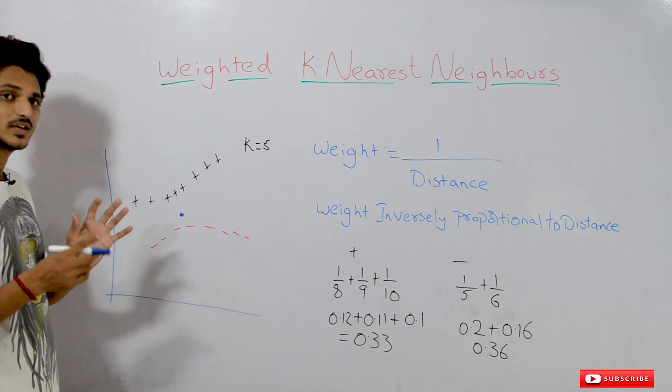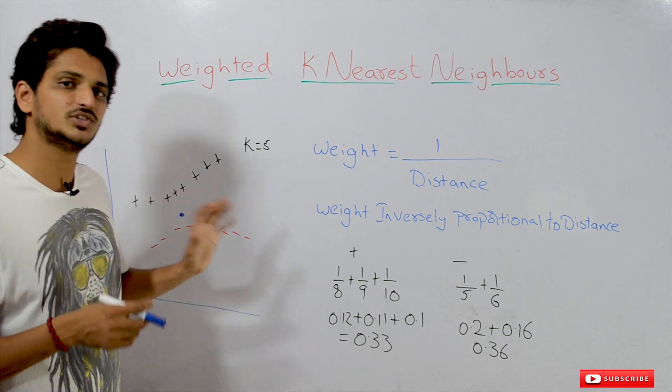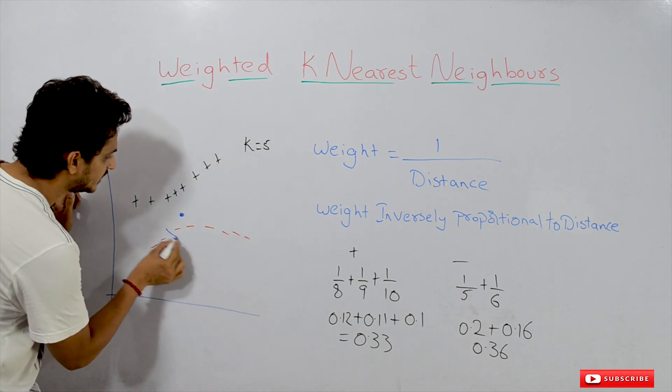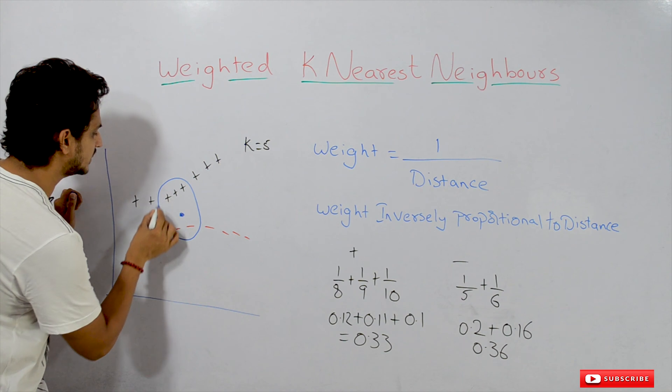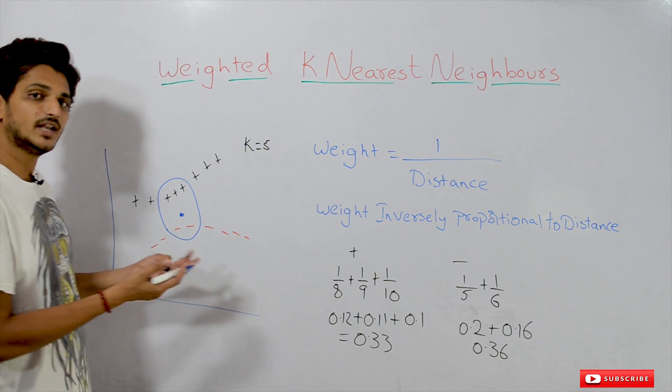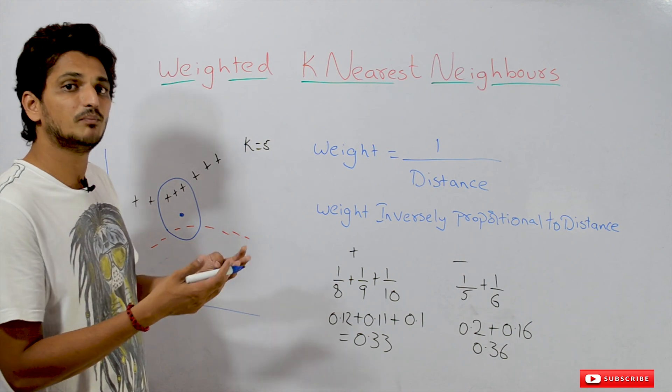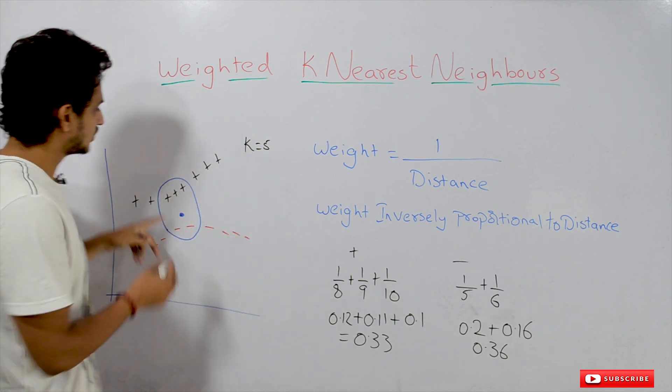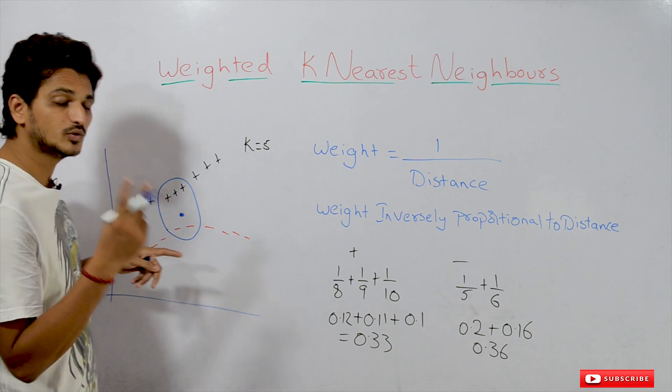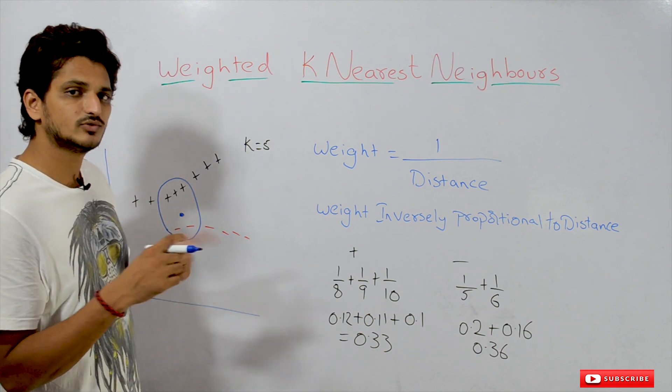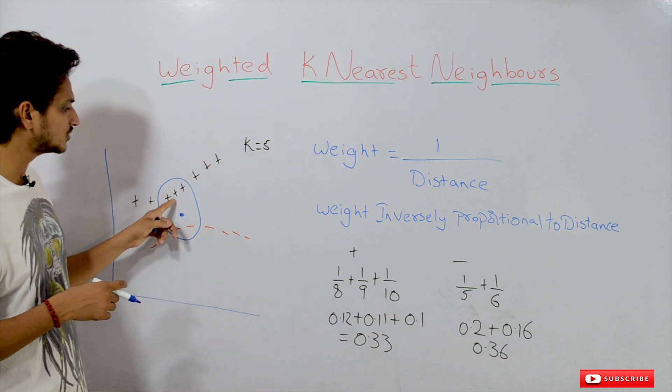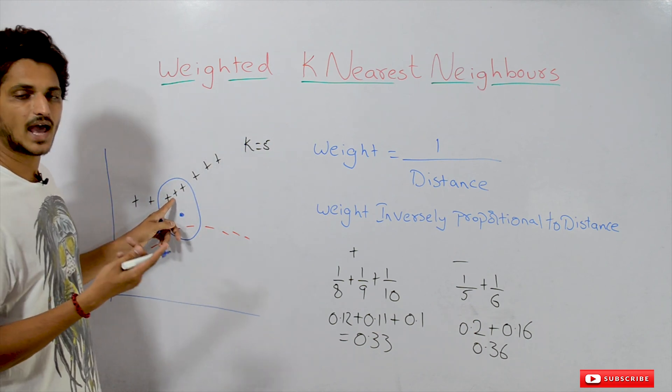So what does k-nearest neighbors do for this testing data point? Let's take k equals 5. It will identify 5 nearest data points. Our k-nearest neighbors will pick the majority class. So how many are there? Positive class we are having 3 and negative class we are having 2 data points. So which one will be picked by k-nearest neighbors? The positive class will be predicted as our output.